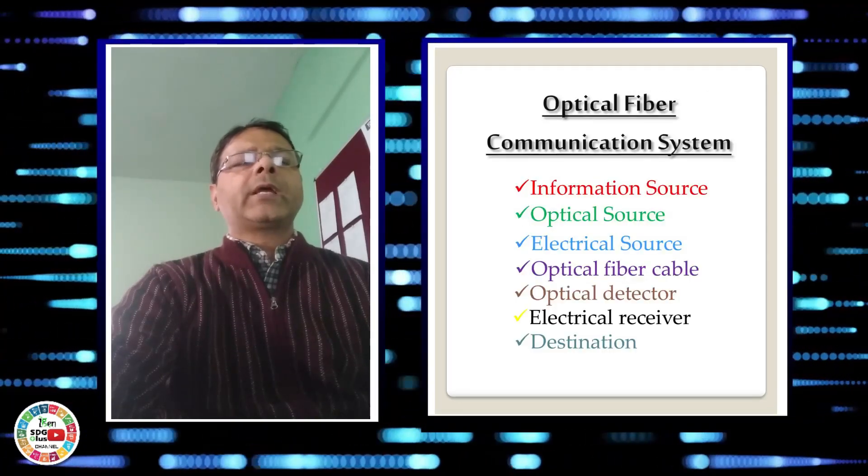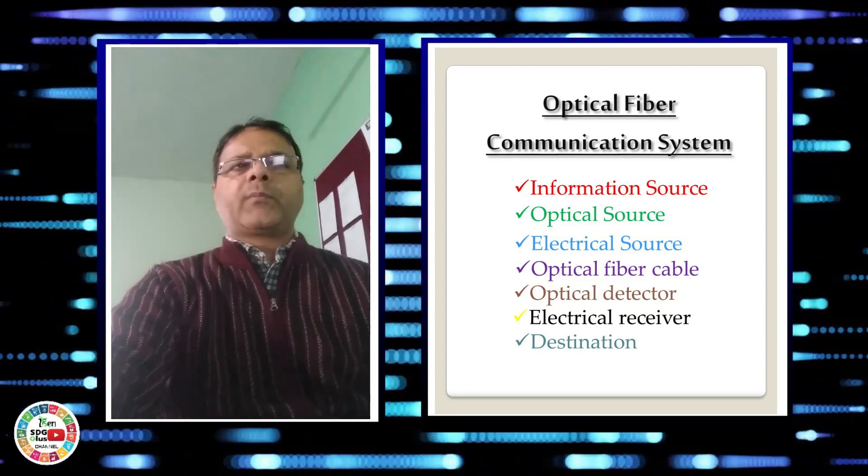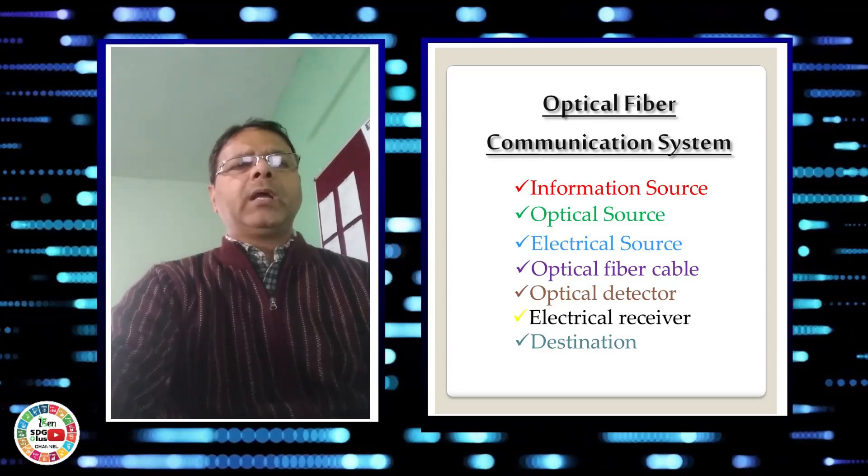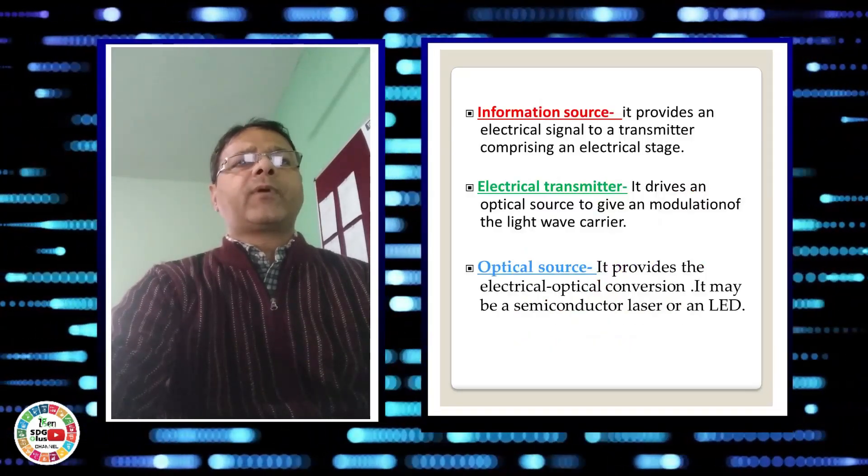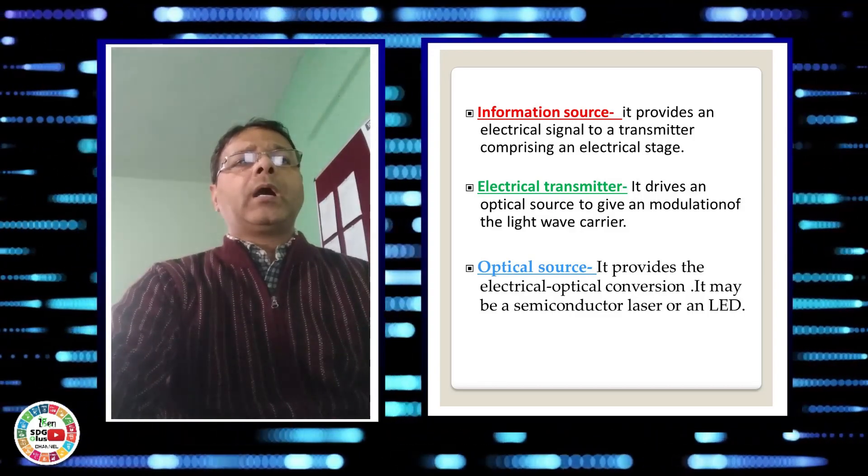Here are some components of optical fiber communication system: information source, optical source, electrical source, optical fiber cable, optical detector, electrical receiver, and destination. The information source may be microphone, camera, or keyboard.